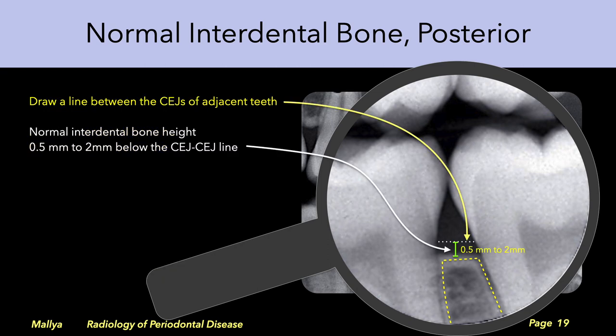To evaluate the height of the interdental bone, draw a line between the cementoenamel junctions of the adjacent teeth. The interdental bone should normally be 0.5 to 2 mm below this line. Note that the edges of the interdental bone are sharp and that the adjacent PDL space is of uniform width.